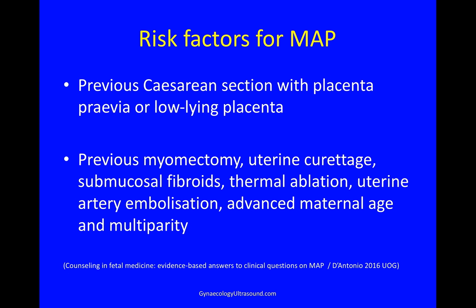The known risk factors for a morbidly adherent placenta in the second and third trimester are a previous caesarean section with a placenta previa or low-lying placenta. Other risk factors include previous myomectomy, uterine curettage, submucosal fibroids, thermal ablation, uterine artery embolization, advanced maternal age, and multiparity.